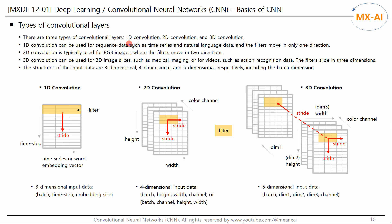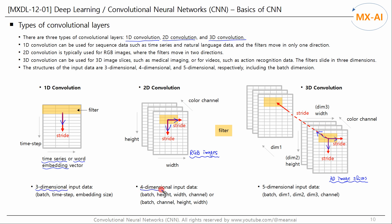There are three types of convolutional layers: 1D convolution, 2D convolution, and 3D convolution. 1D convolution can be used for sequence data such as time series and natural language data, where filters slide in one dimension. 2D convolution is typically used for RGB images, where filters slide in two dimensions. 3D convolution can be used for 3D image slices such as medical imaging, or for videos such as action recognition data, where filters slide in three dimensions. The input data structures are three-, four-, and five-dimensional respectively, including the batch dimension.